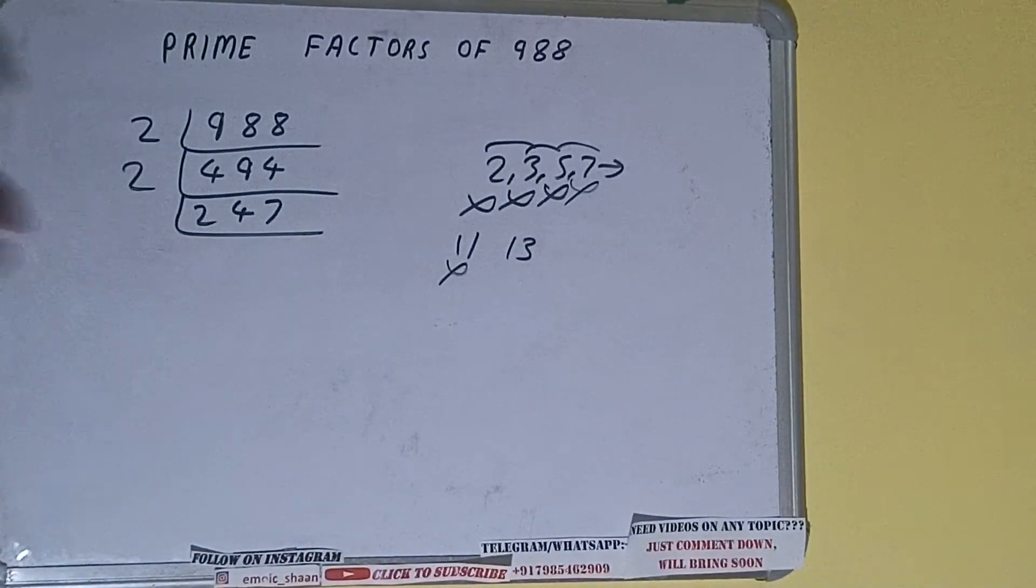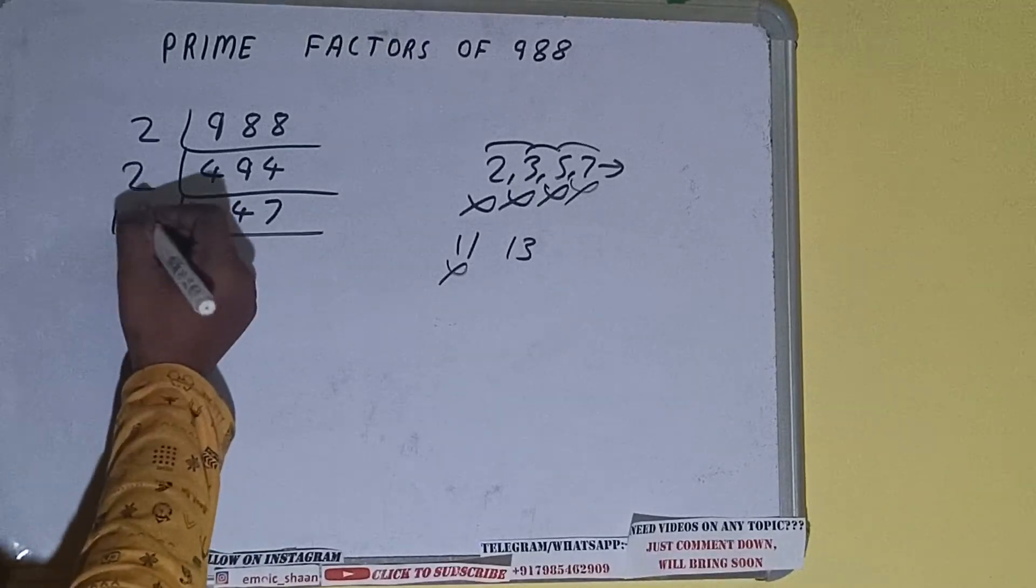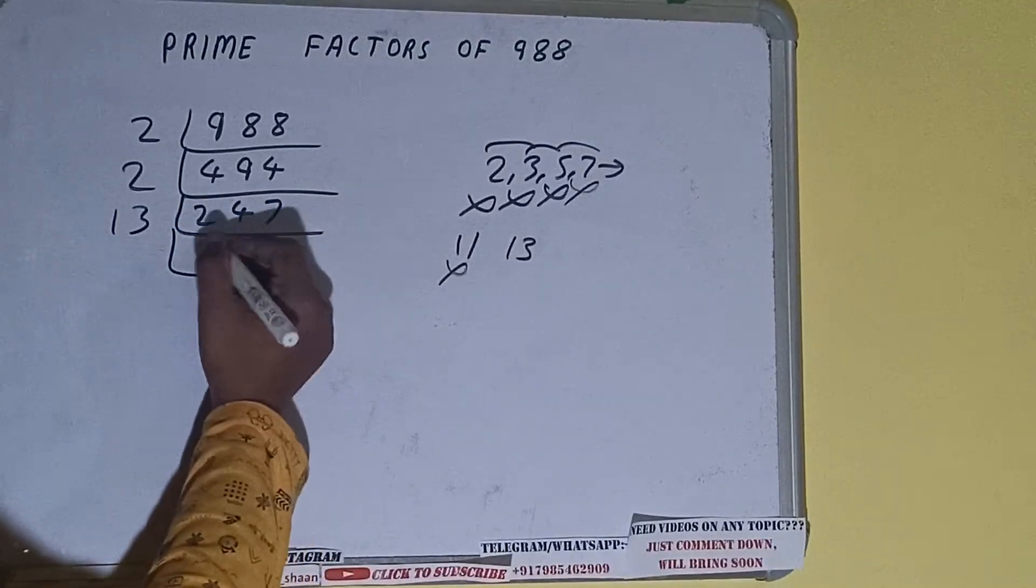Let's check with 13. 13 ones are 13, 13 nines are 117. With 13 it is divisible, so divide it. 13 ones are 13, 13 nines are 117.